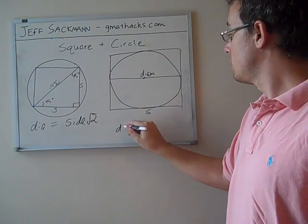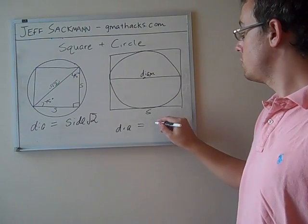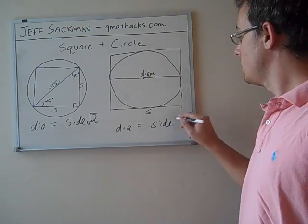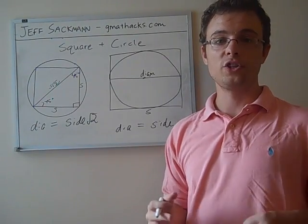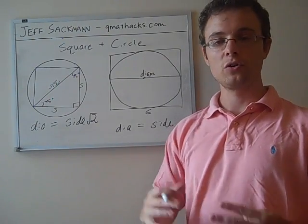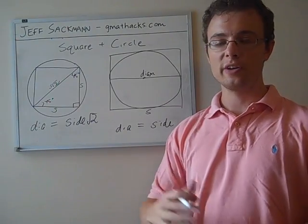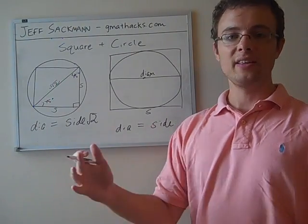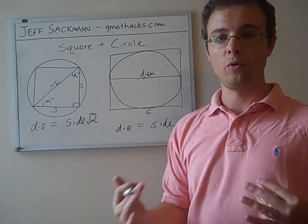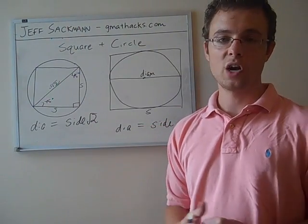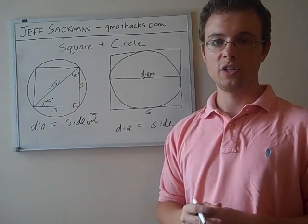So in this case, the diameter of the circle is equal to a side of the square. So if you want to figure out the ratio of the area of the circle to the area of the square, the perimeter of the square to the perimeter of the circle, anything you want to do, you know these two are the same. You can substitute them for each other in equations. You can figure out any of those relationships that you want to figure out.